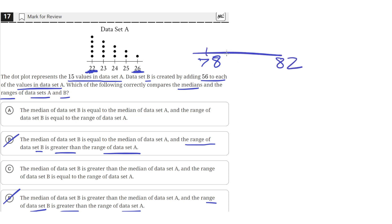So in data set B, the median will be much larger because it will have to be a value between 78 and 82 compared to data set A. So data set B's median will be much larger than data set A's median.